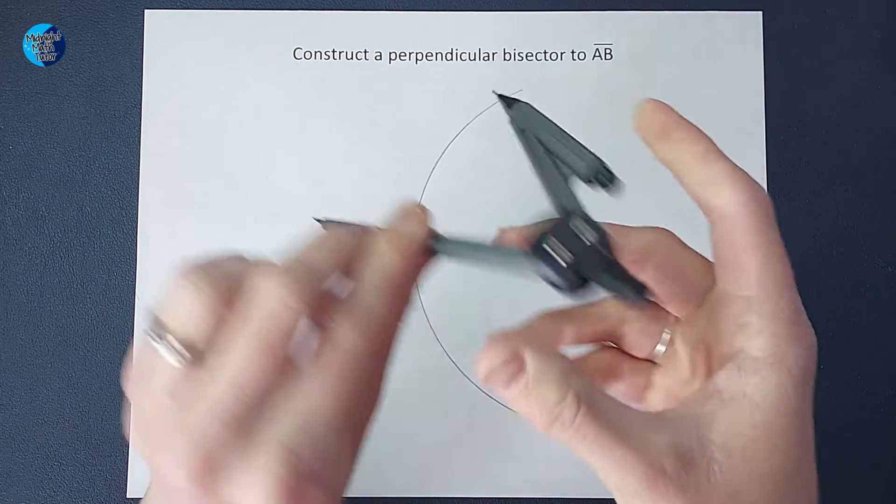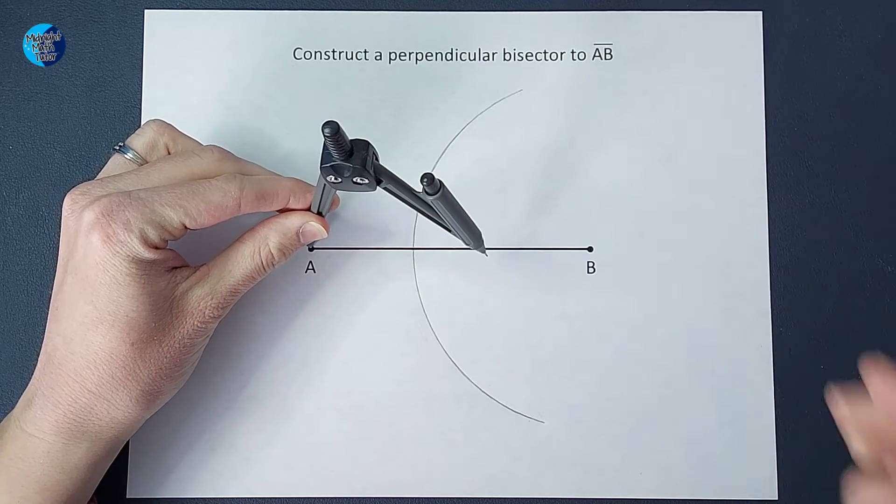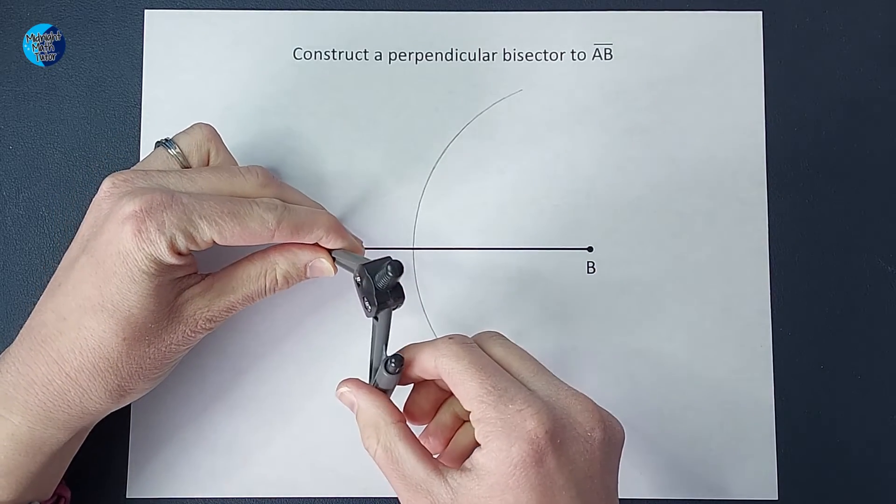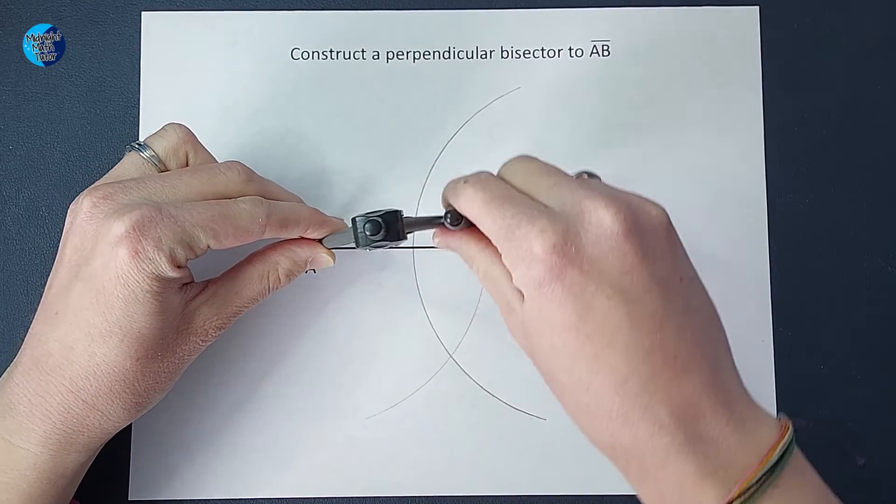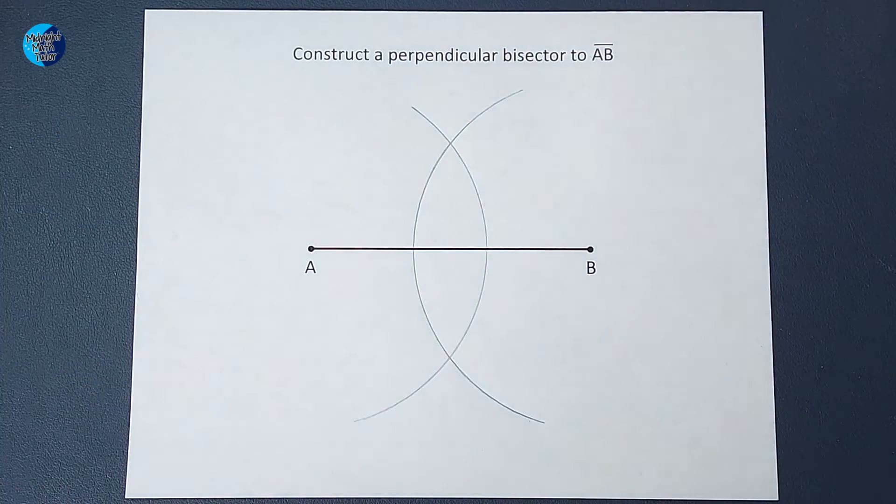Keeping our compass the same size, that is key. Keeping our compass the same size, we are going to do the same thing on the other side. Big swoop. There we go.